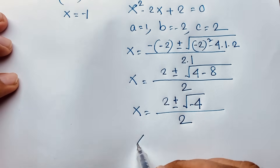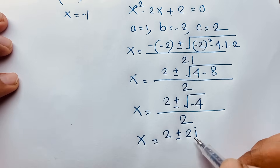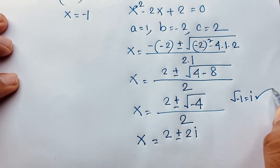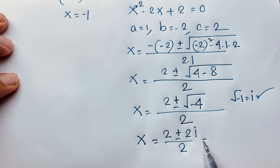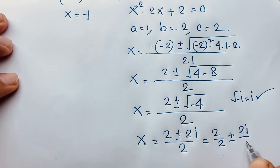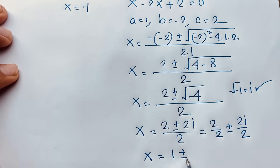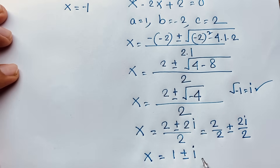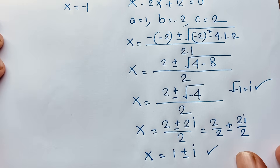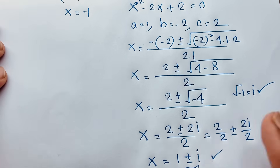Now this expression: x is equal to 2 plus or minus 2i over 2. Square root of negative 4 will be 2i — it is a complex number. Square root of minus 1 is i. If I separate this fraction, it will be 2 over 2 plus or minus 2i over 2. Then x is equal to 1 plus or minus i. This is our final solution. The value of x is equal to 1 plus or minus i, and x is equal to negative 1.